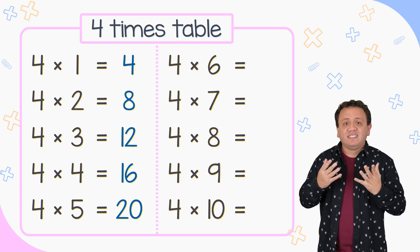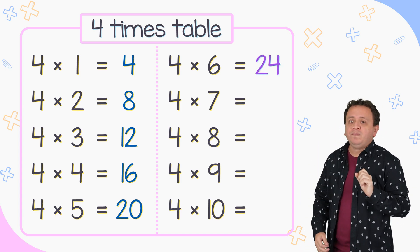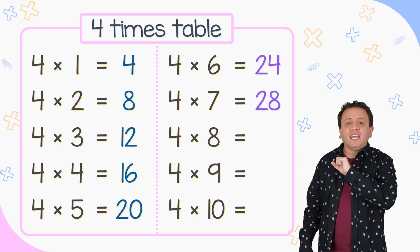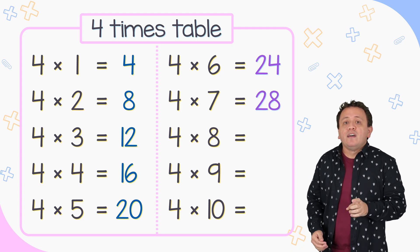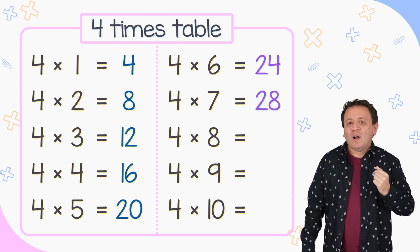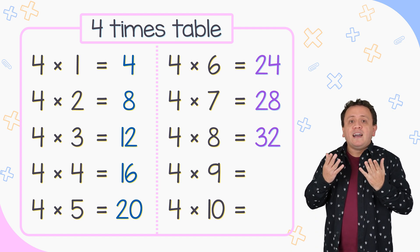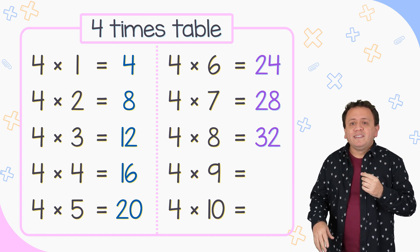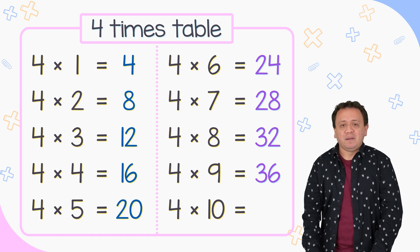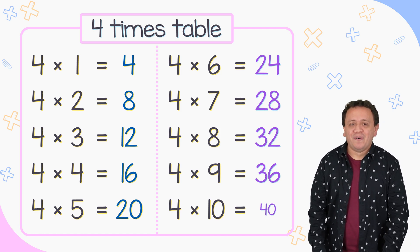4 times 6 is equal to 24. 4 times 7 equals 28. 4 times 8 equals 32. Finally, 4 times 9 equals 36. And 4 times 10 equals 40.